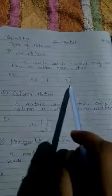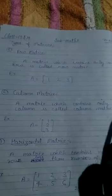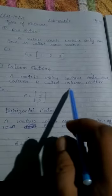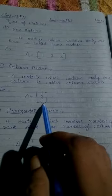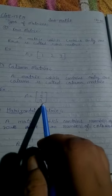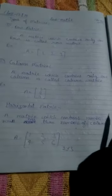Second, column matrix. A matrix which contains only one column is called column matrix. For example, A = [1; 2; 3]. Here, three rows and one column, so it is called a column matrix.